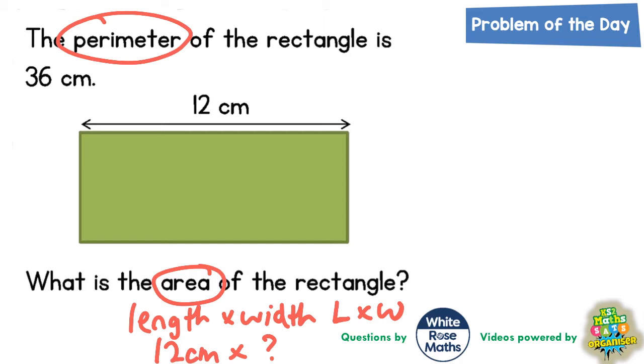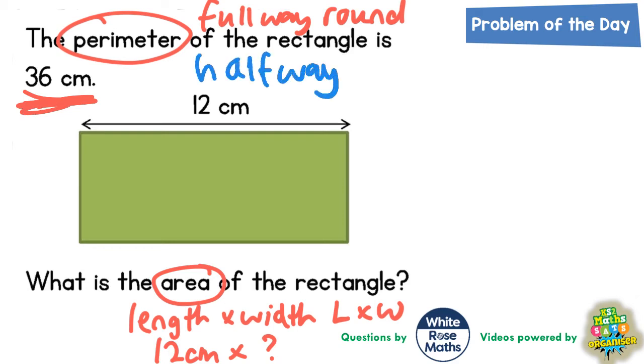Now there's a couple of ways we could do this. We could say well the perimeter is the full way round the outside of the rectangle. So the full way round is 36 centimeters. And this means half way round must be half of 36. And half of 36 is basically 36 divided by 2. So hopefully we can do that in our head and find that it's 18.